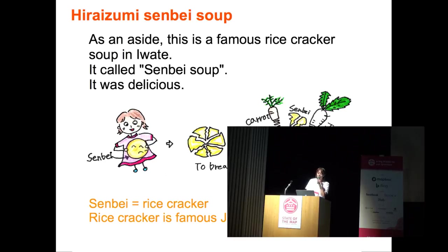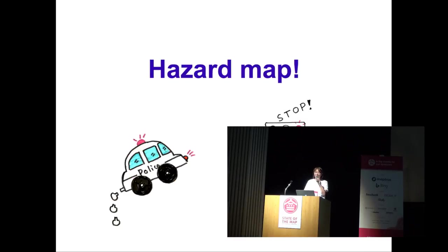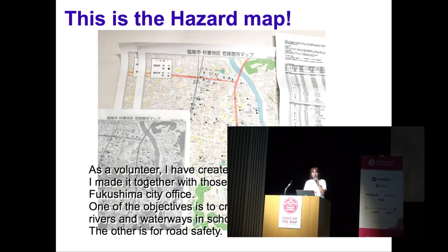There are 21 World Heritage Sites in Japan, so I enjoyed these trips. Next, Hazard Map: as a volunteer, I have created a Hazard Location Map. I made it together with the School PTA and Fukushima City Office.